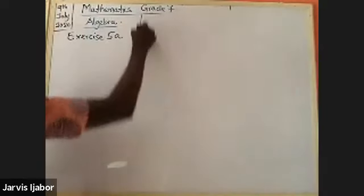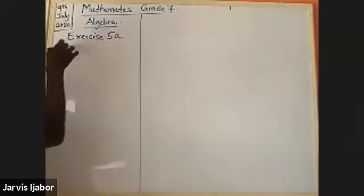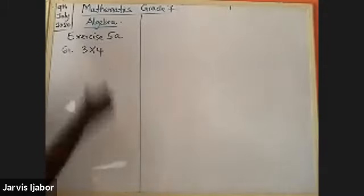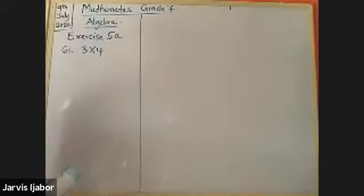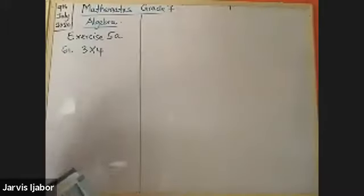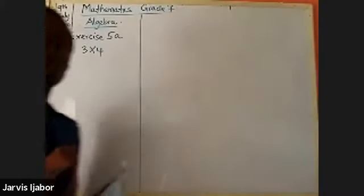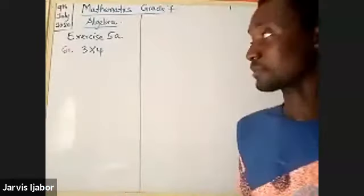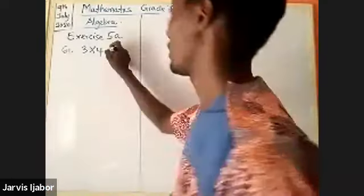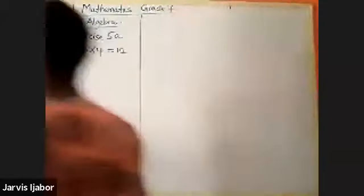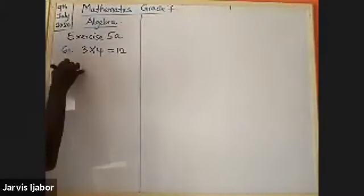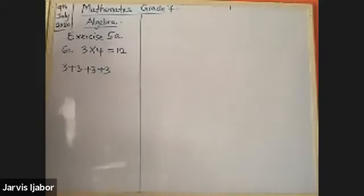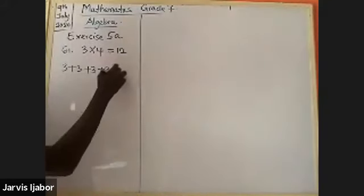Question sixty-one says three times four. You need your multiples: three times one is three, three times two is six, three times three is nine, three times four is twelve. Alternatively, three times four means three added four times: three plus three plus three plus three equals twelve.